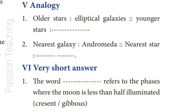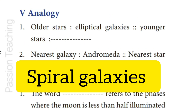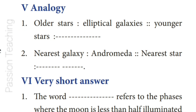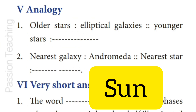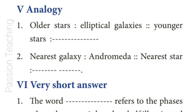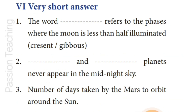Fifth Roman Letter: Analogy. Question 1: Older Stars — Elliptical Galaxies; Younger Stars — Answer: Spiral Galaxies. Question 2: Nearest Galaxy — Andromeda; Nearest Star — Answer: Sun.